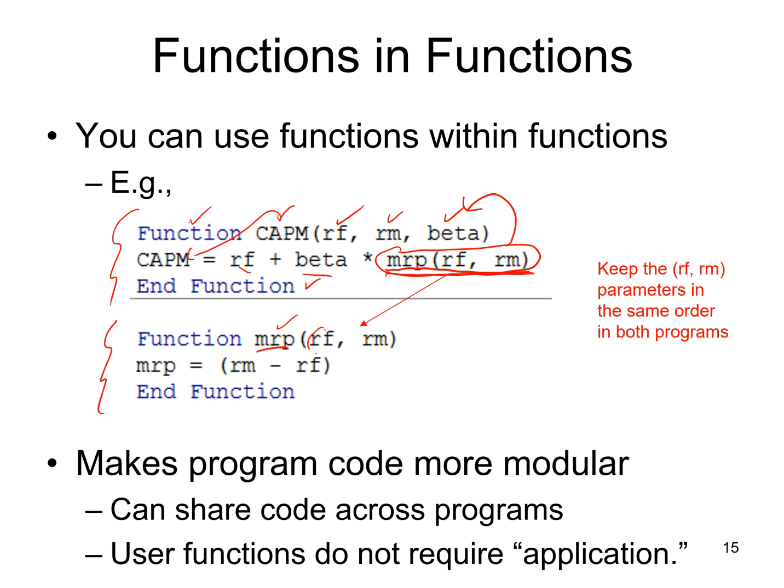It's going to get the values RF and RM from these two places. Remember that these got them from this place and this place. It's then going to do the calculation MRP equals RM minus RF, return the value to the original function, and complete the calculation.